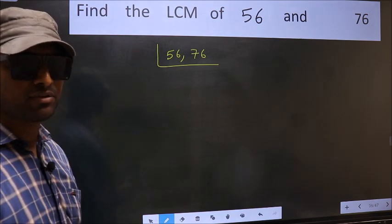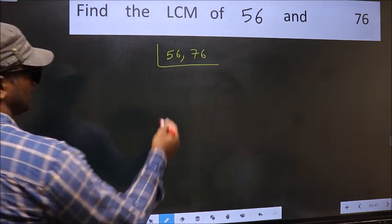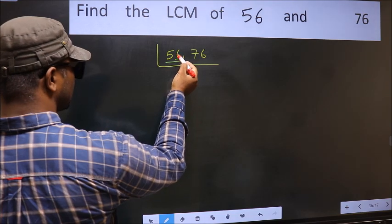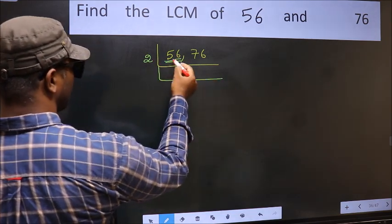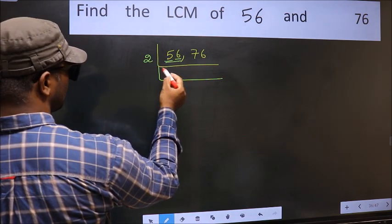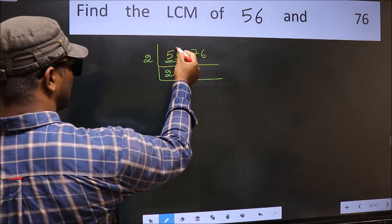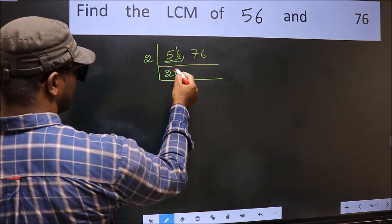Now you should focus onto the first number which is 56 here. For this number last digit 6, even, so take 2. First number 5, a number close to 5 in 2 table is 2 times 2 is 4. 5 minus 4, 1, 1 carried forward 16. When do we get 16 in 2 table? 2, 8, 16.